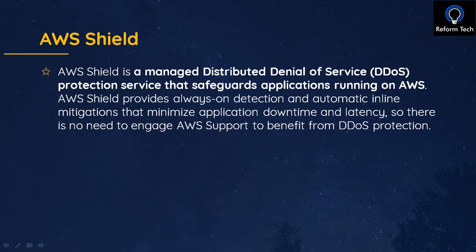Next is AWS Shield — a managed DDoS (Distributed Denial of Service) protection service that safeguards your applications on AWS. By default, it is enabled even in the free tier as AWS Shield Standard, providing protection against common DDoS attacks.